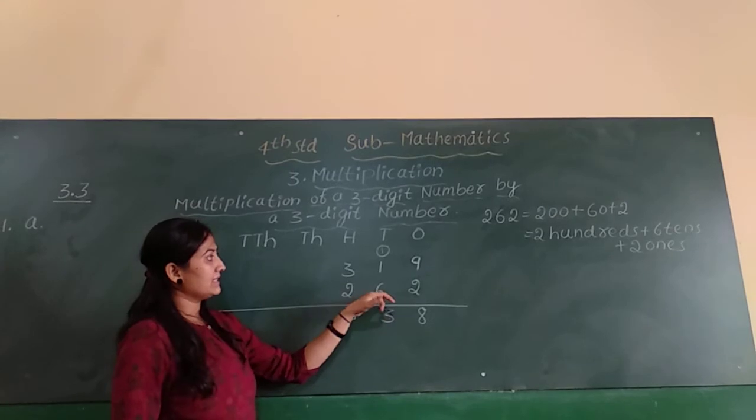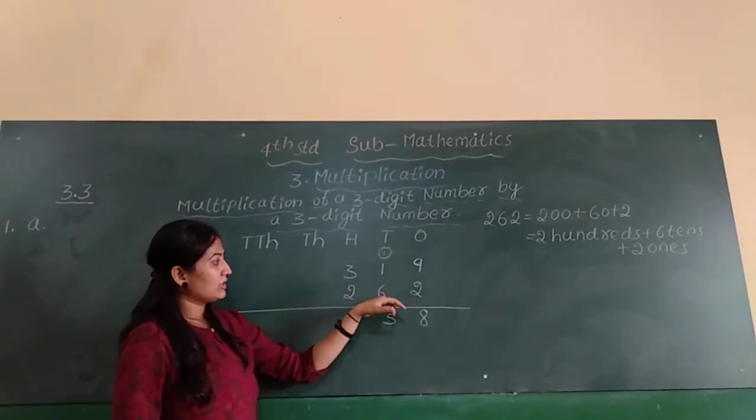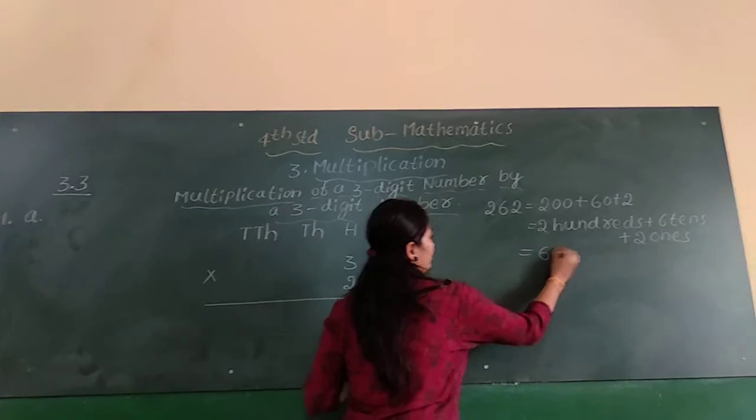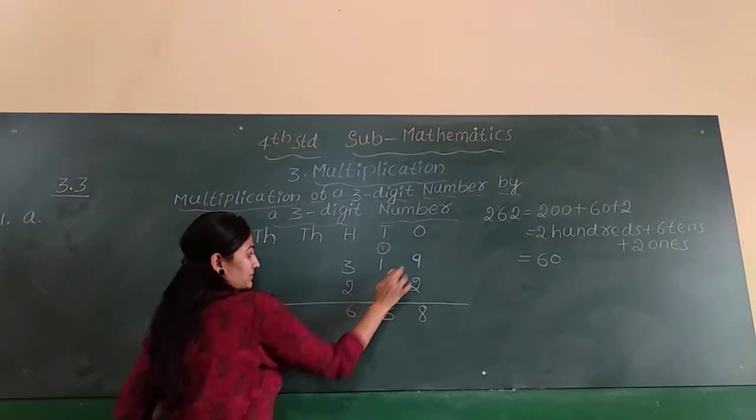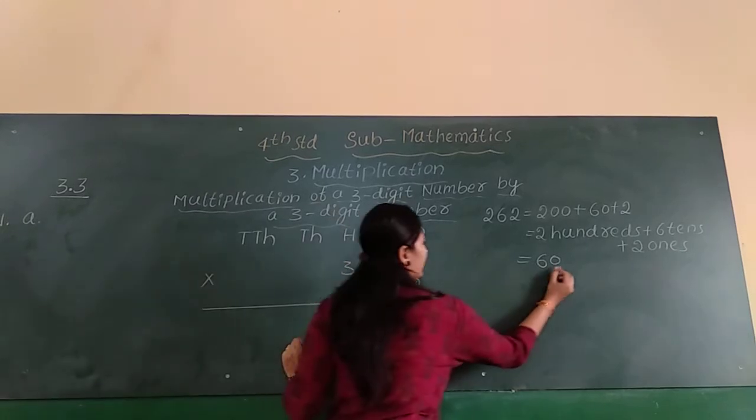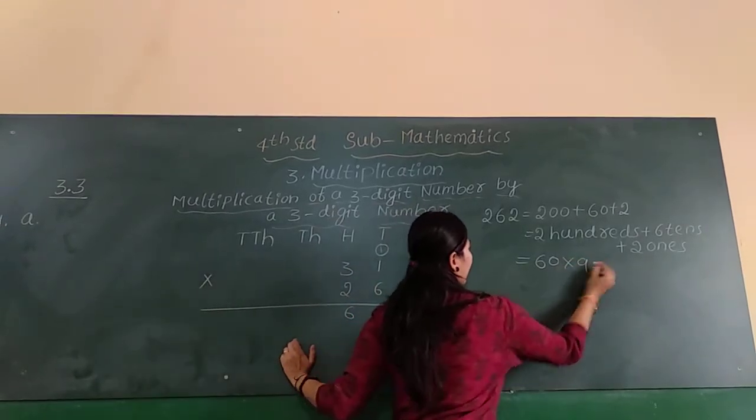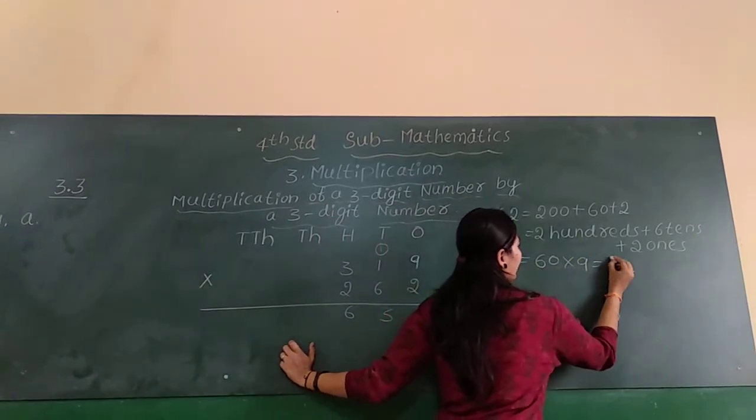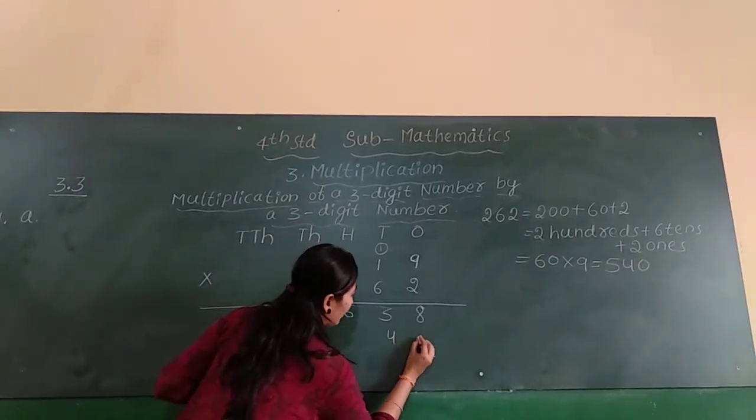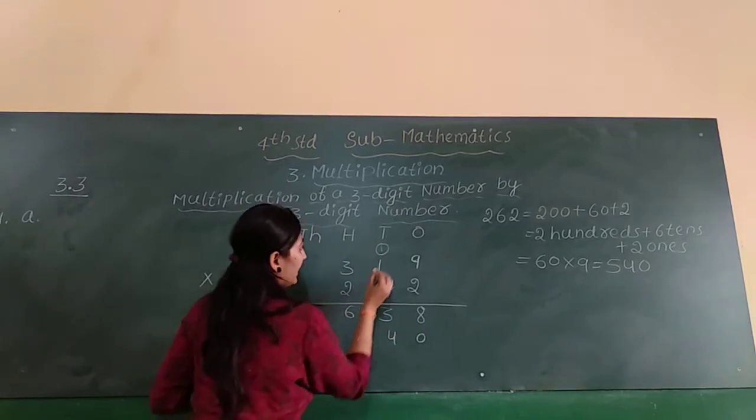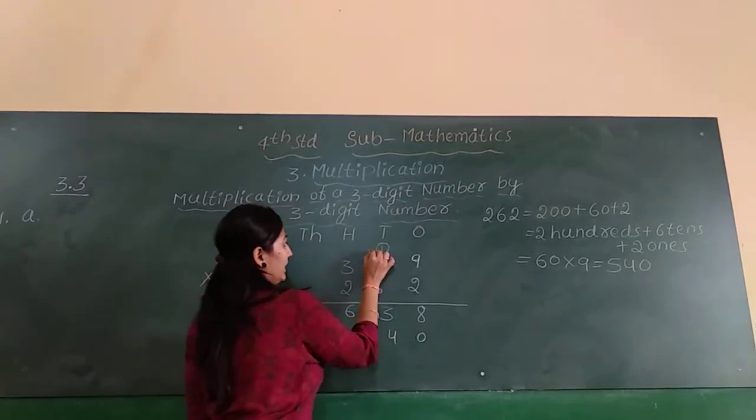Next 6 is in the tens place, so 6 tens means 60. So you want to multiply by 60. 60 into 9, 6 nines are 54, so write 4, 0 here and 5 carry over.